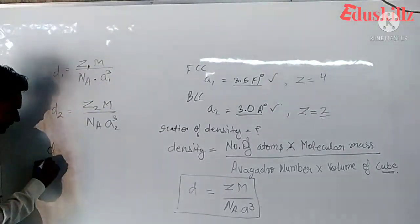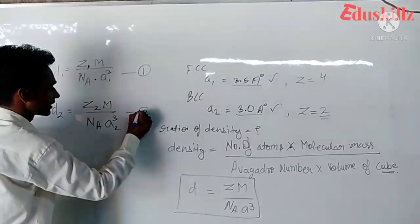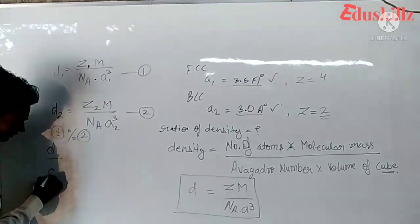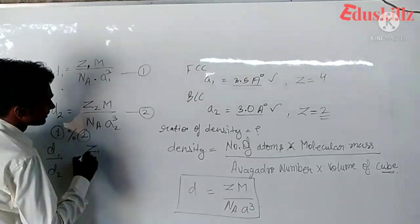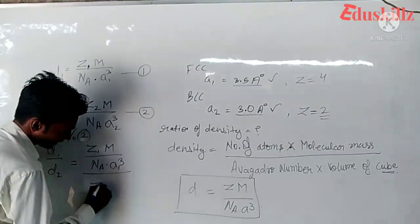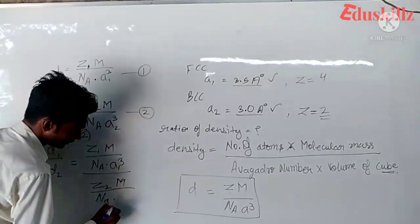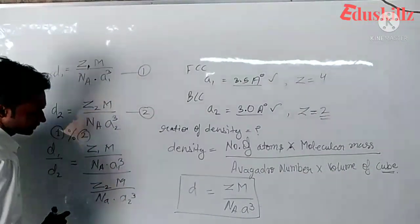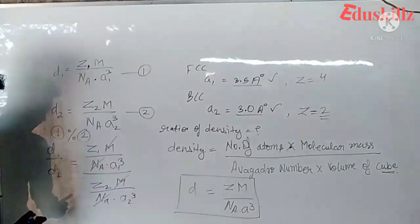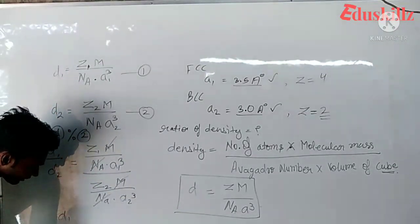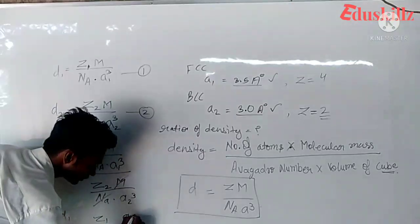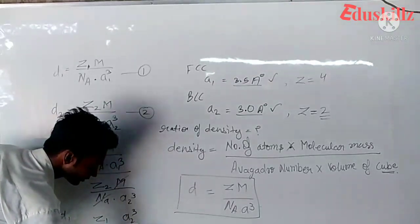Now we will take the ratio. We divide equation 1 by equation 2. D1 upon D2 equals Z1 upon NA times a1 cubed divided by Z2 times m upon NA times a2 cubed. The m and NA are similar, so we have D1 upon D2 equal to Z1 upon Z2 times a2 cubed upon a1 cubed.